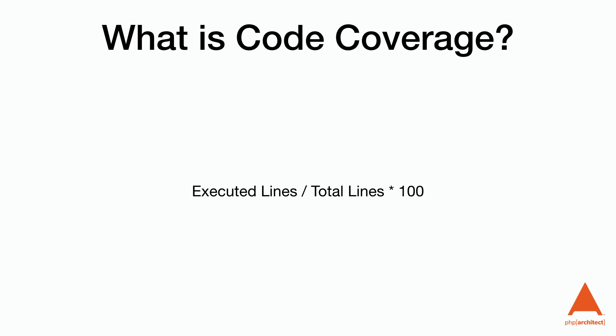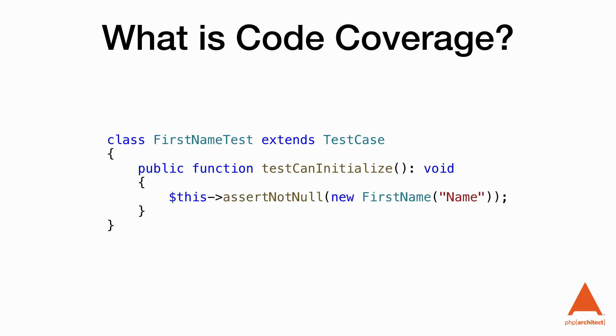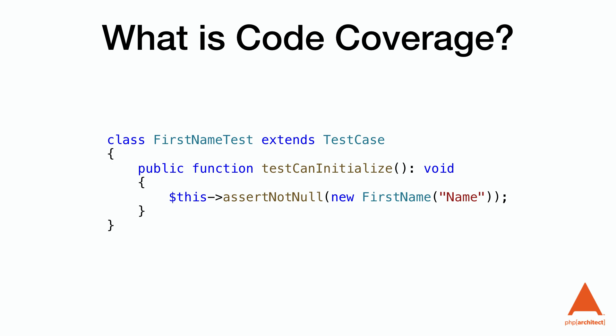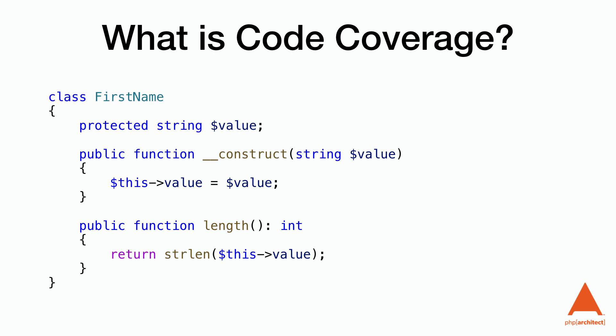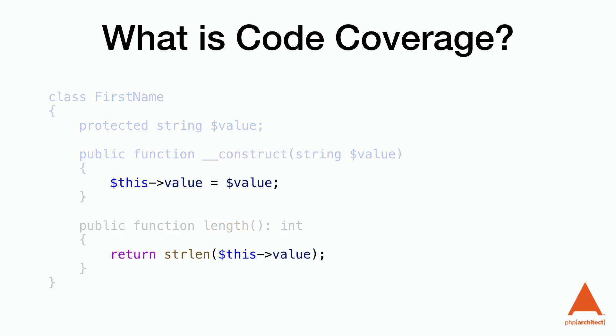Code coverage is a software testing metric that determines how much of your code is run during your test process. It is calculated as a percentage by taking the number of lines of code executed by our tests and dividing by the total number of lines, times 100. The total lines count only includes lines performing operations, not declarations or white space. As an example, in a class with a basic constructor and function, if the test only checks if the class can be initialized, we only have two executable lines. The tests only call the constructor, so only the assignment operation is covered, giving us 1 divided by 2 times 100 — 50% code coverage.